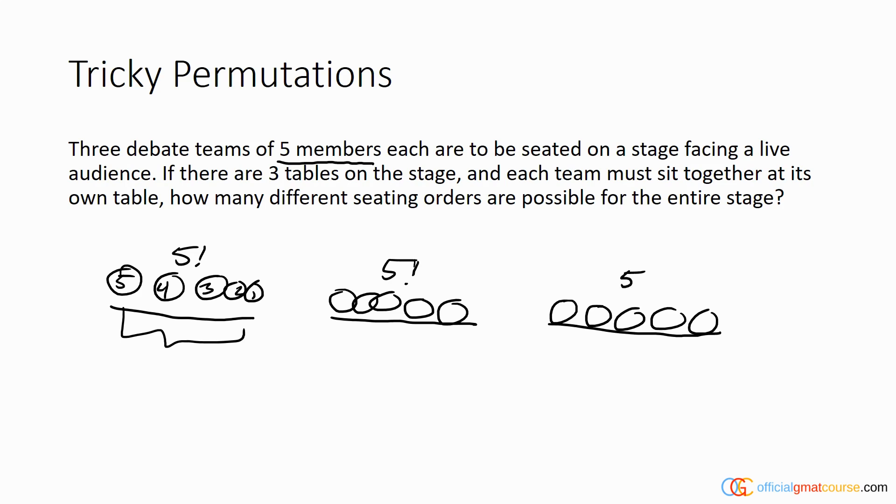Now if we were just saying we're going to order these where team A goes here, team B goes here, and team C goes here, the total seating orders from left to right would be 5!×5!×5!.